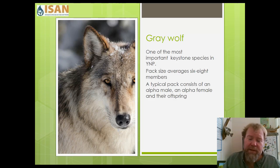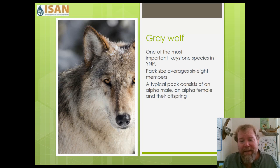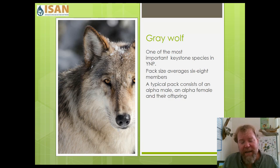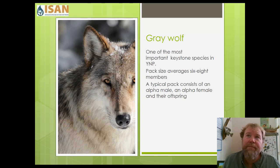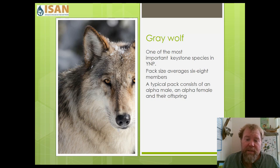Now let's talk about the gray wolf. The gray wolf is probably the most important keystone species in Yellowstone National Park — it is essential for the proper functioning of that entire ecosystem. Gray wolf packs average six to eight members in size. The typical pack consists of an alpha male, an alpha female, and their offspring. They are highly structured, complex social groups, and the alpha pair are the only ones who mate within the pack.